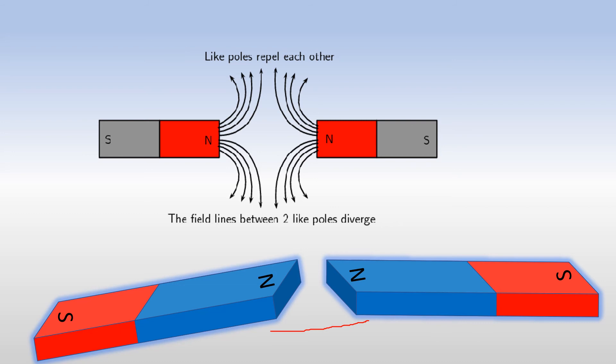Now when you see the diagram, it's very clear for you that when two like poles come closer to each other, they always repel. They always repel, right? So like poles always repel. So the field lines between two like poles also diverge. Now if you see over here, you'll see that the magnetic field lines are diverging away from each other.